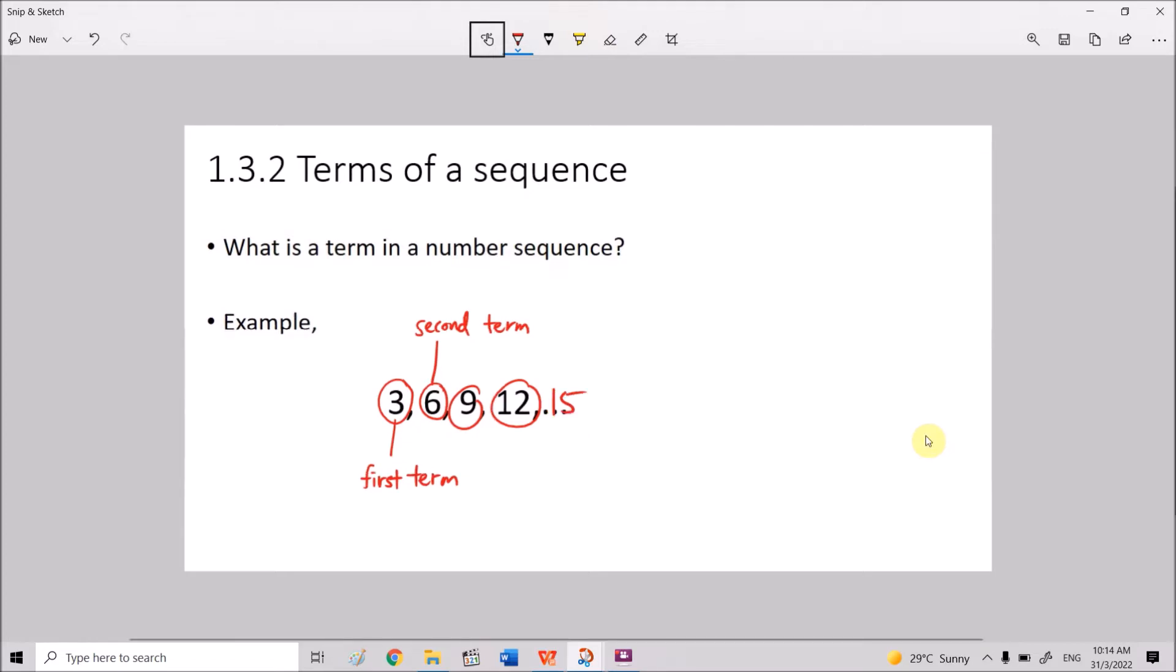And if the list continues, if the sequence continues, which is 15, 18 here, this will be your fifth term and your sixth term. So basically the word terms here help us to determine the position of the number in the number sequence. If I say the fourth term, we are referring to the number 12. Hence the fourth term is number 12.